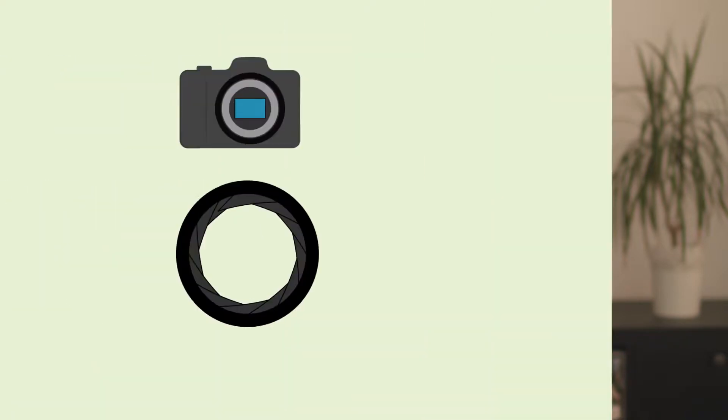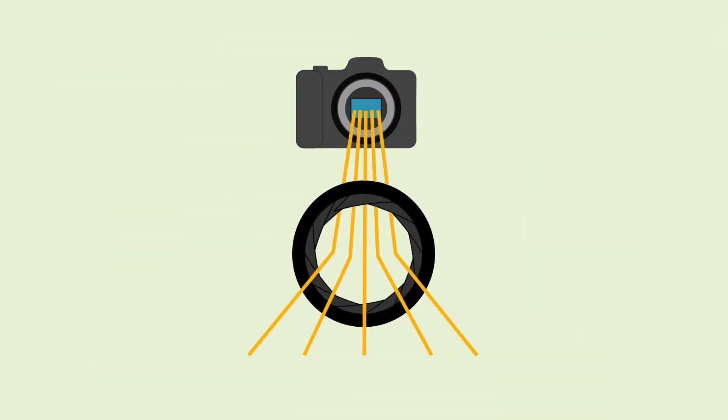In this video we're going to talk about the second aspect that determines the exposure of your picture: the shutter speed. The shutter speed is the time in which light falls into the camera and onto the sensor, so the time in which your picture is being exposed.